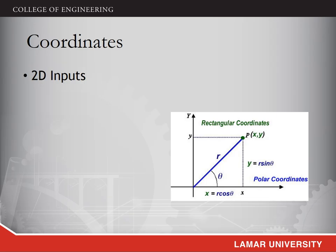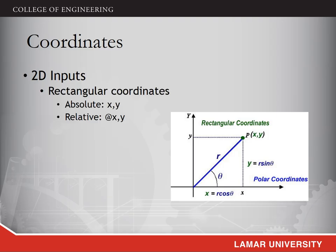In AutoCAD, we can draw both 2D and 3D objects, so there are two-dimensional and three-dimensional coordinate systems. For 2D coordinates, there are two types of definitions: rectangular coordinates and polar coordinates.